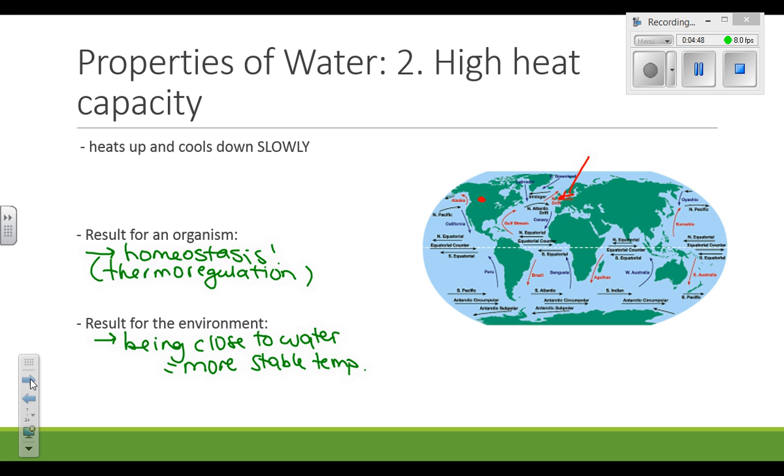And you might remember learning in grade 10 that if you compare our weather to the weather of somewhere in the UK, we get much hotter in the summer, much colder in the winter, because we don't have water moderating our temperature.